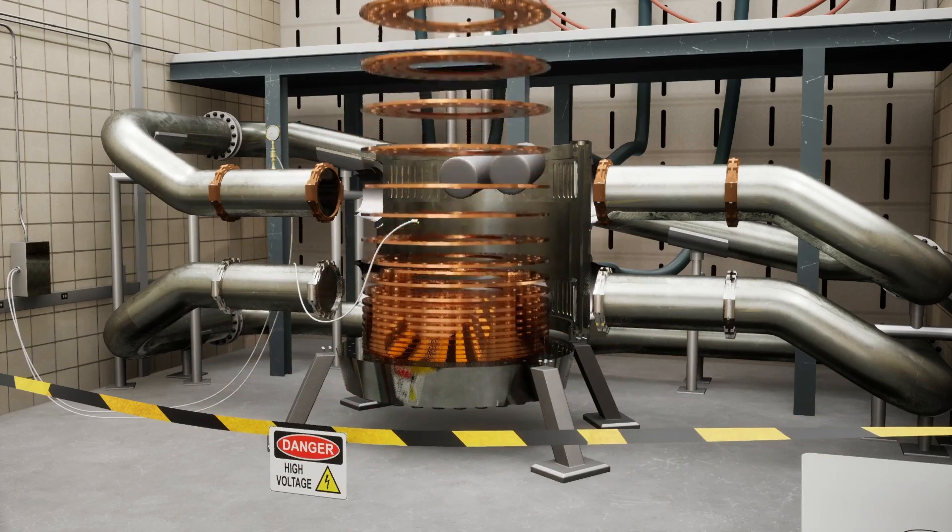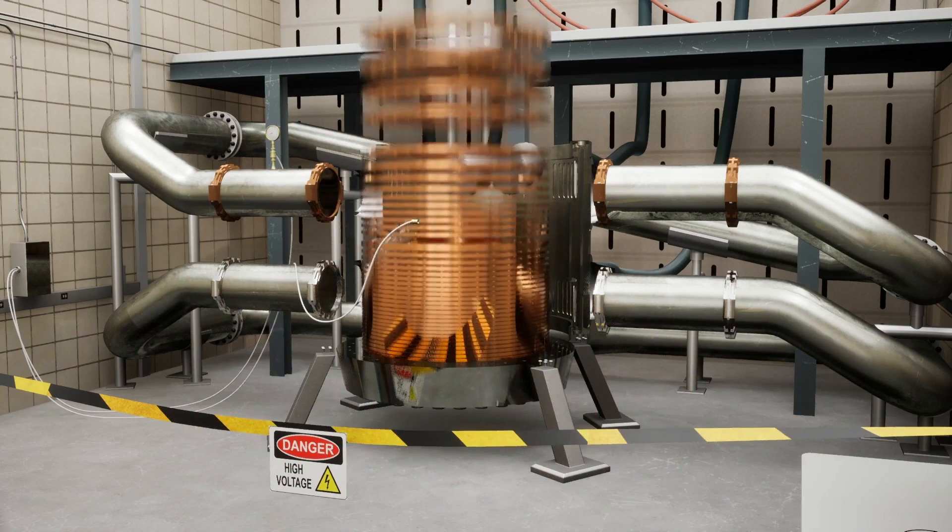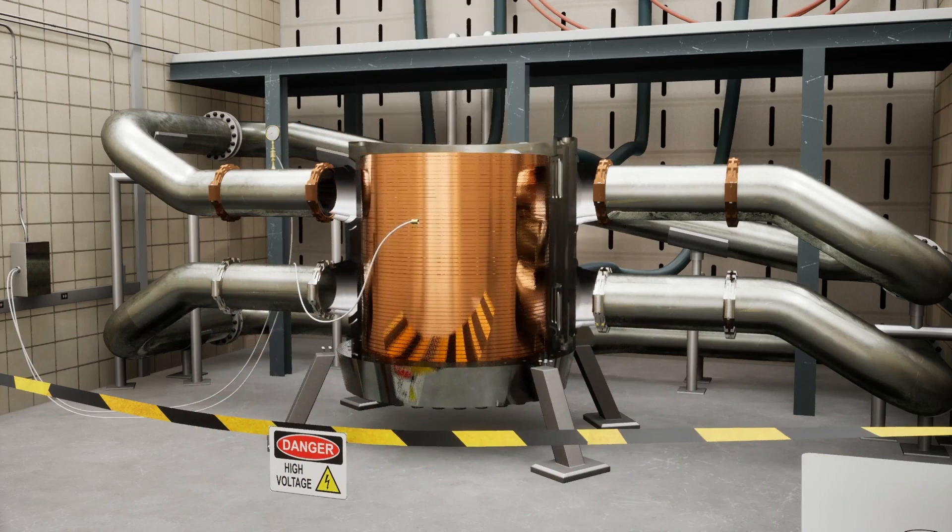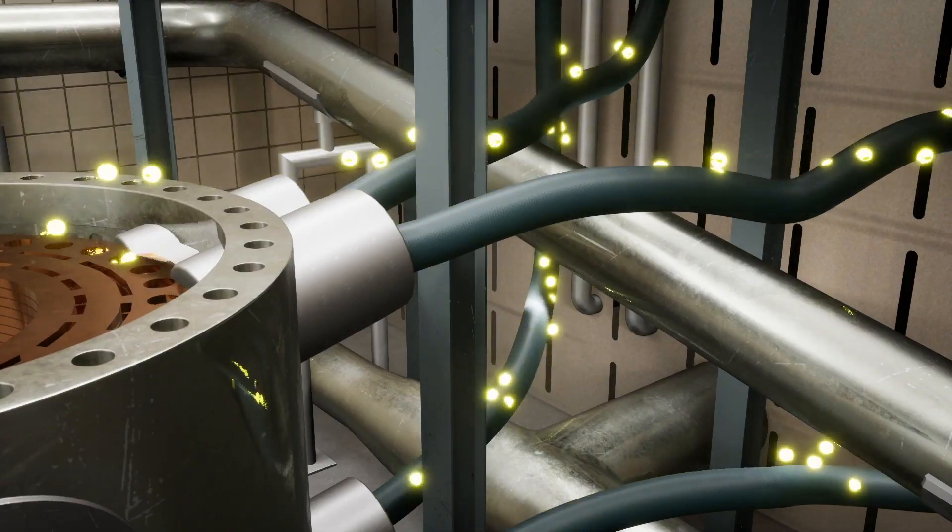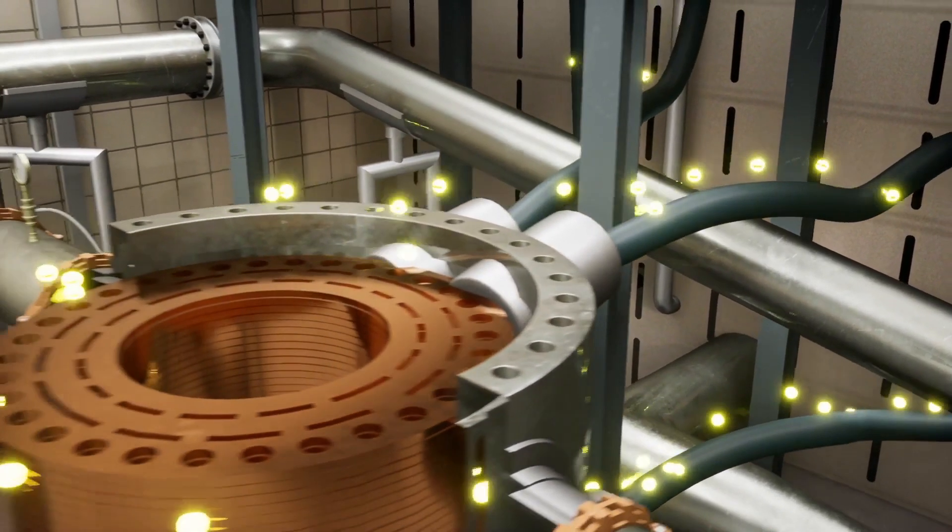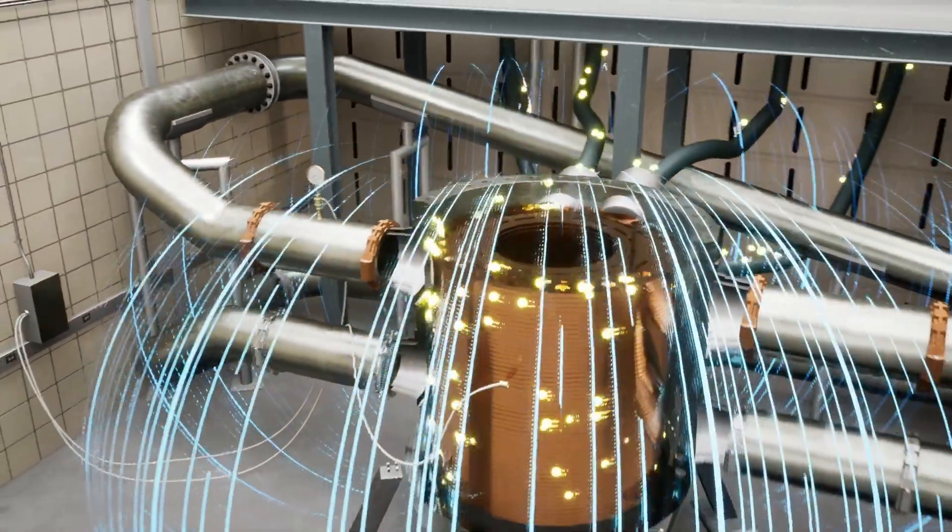We also build magnets from a special material called a superconductor, but that's a story for another time. Then we pump lots of electricity through it, about 29,000 times more than your toaster uses.